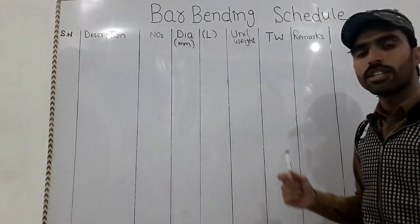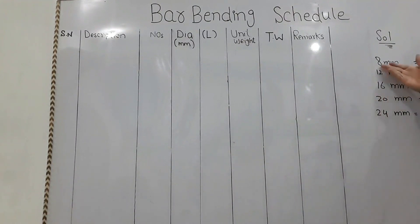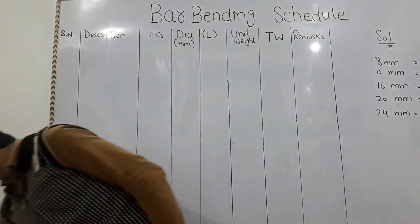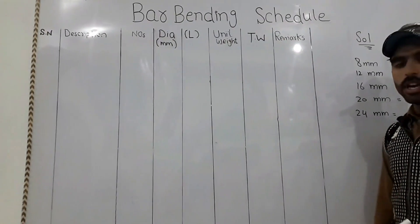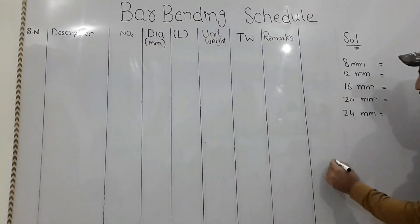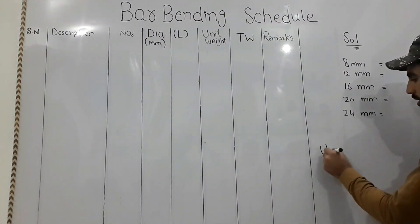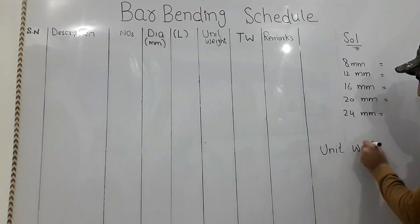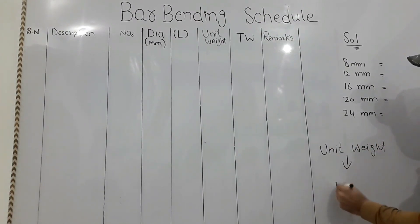Then there is total weight, and finally remark — where you can write instructions for any steel you need. Now I will show you how to calculate the unit weight of steel. The formula for unit weight per meter length is: d squared divided by 162.